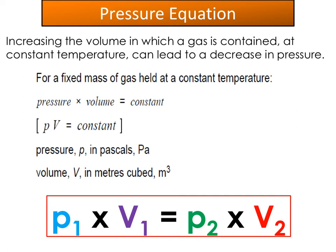Exam questions on this equation are often easier to answer using p₁V₁ = p₂V₂, since both sides equal the same constant. A typical question gives you an initial pressure and volume and asks you to find the new pressure after a volume change. You can either substitute directly into p₁V₁ = p₂V₂, or calculate the constant from the initial values and then divide by the new volume to find the new pressure.